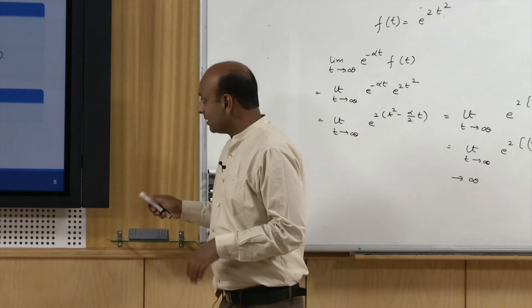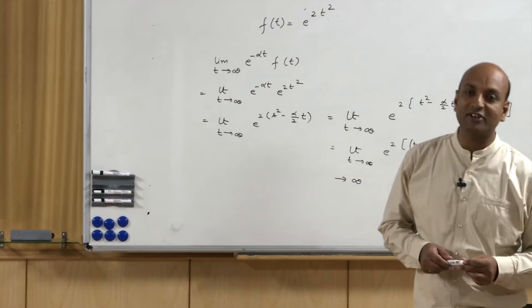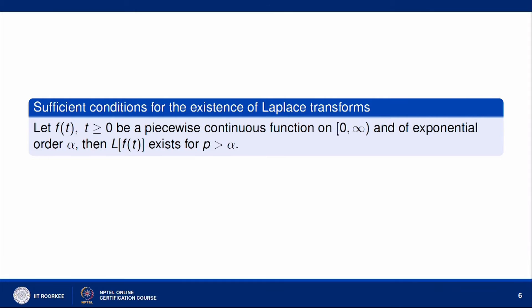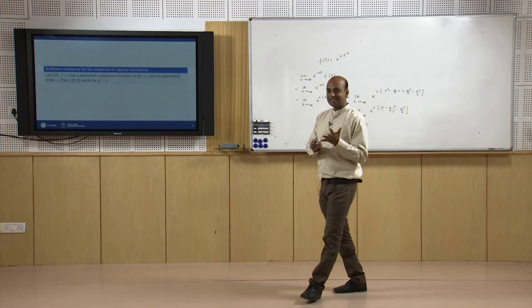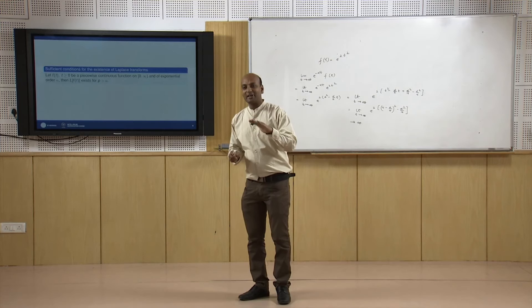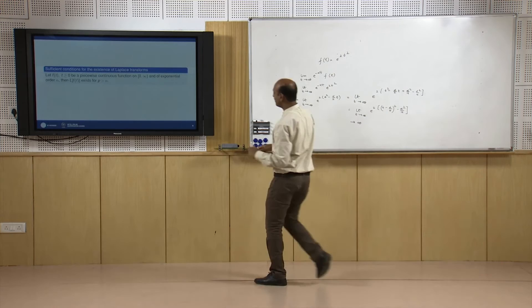Now we come to sufficient conditions for the existence of Laplace transforms. If f(t) is a piecewise continuous function for t ≥ 0 and is of exponential order α, then the Laplace transform of f(t) always exists. This is the sufficient condition: both conditions — piecewise continuity and exponential order α — must hold, and then we can surely say the Laplace transform exists.